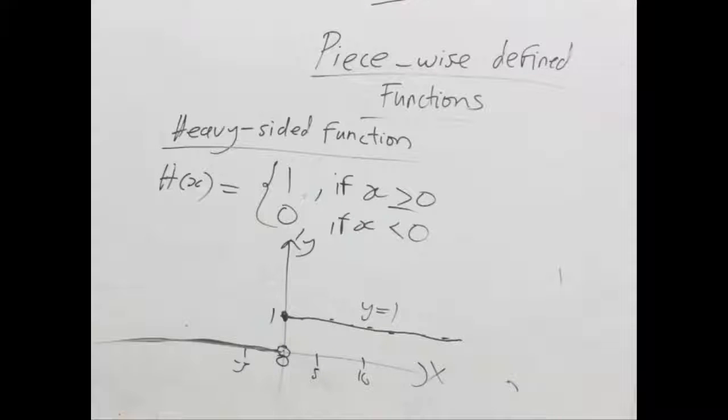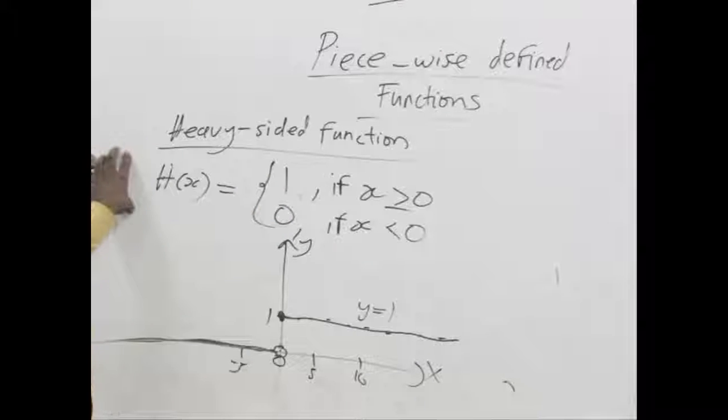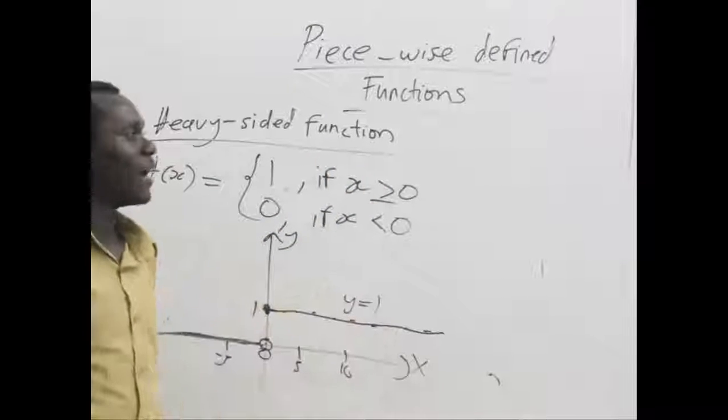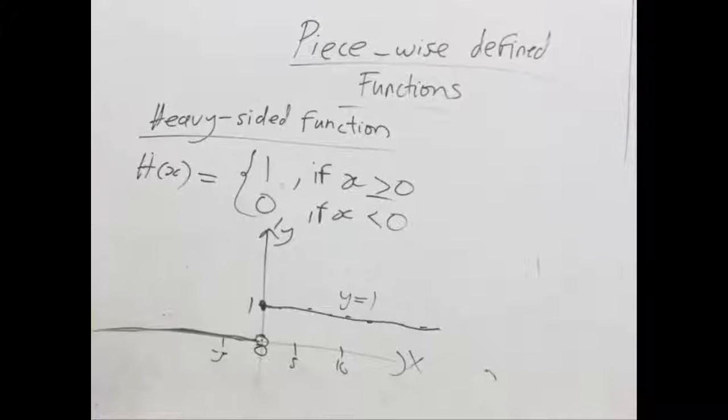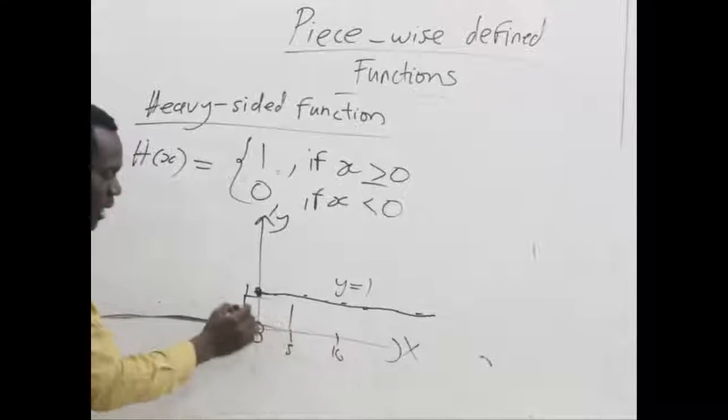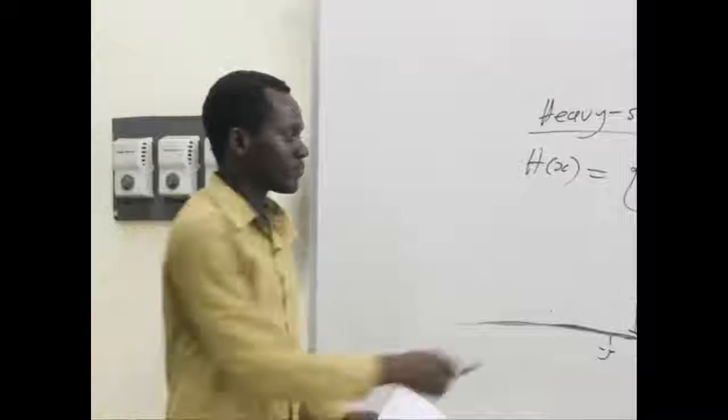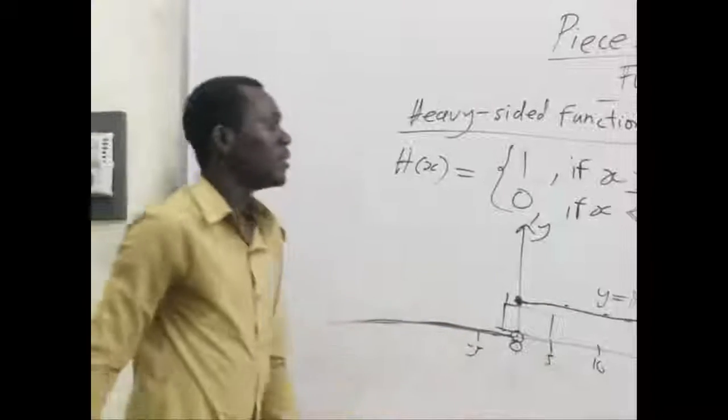So this kindly explains what piecewise defined functions are. We take note that we have two different functions in one function. And the arguments are all different. So here you can see there is a gap created in between these two lines. So we will also talk about such gaps in subsequent lessons.